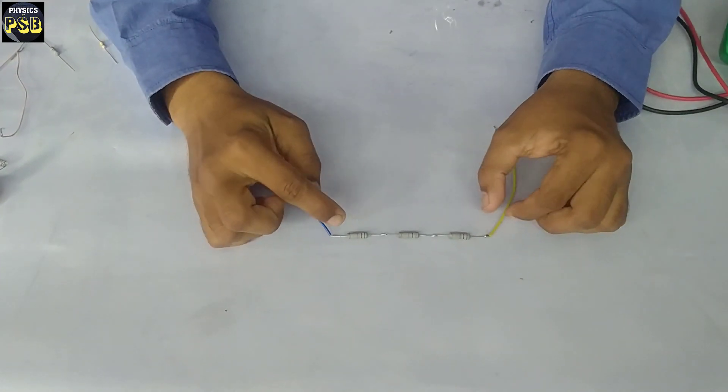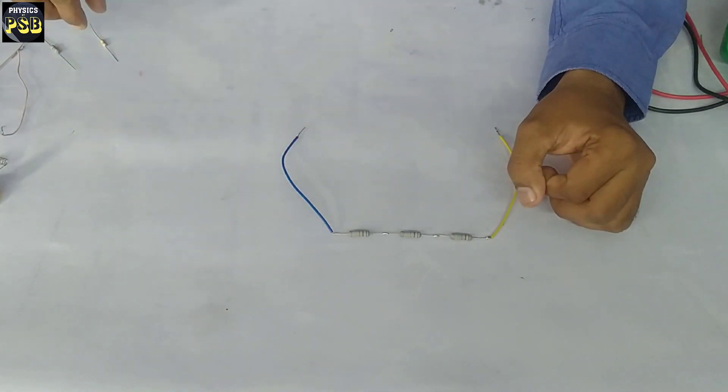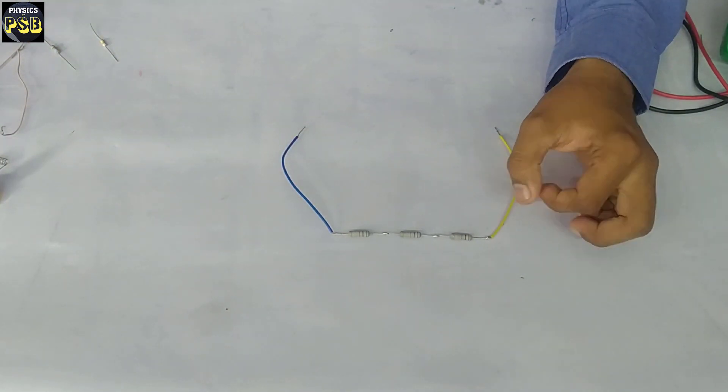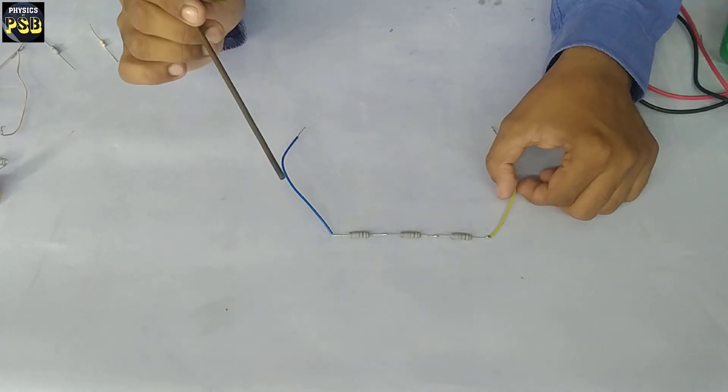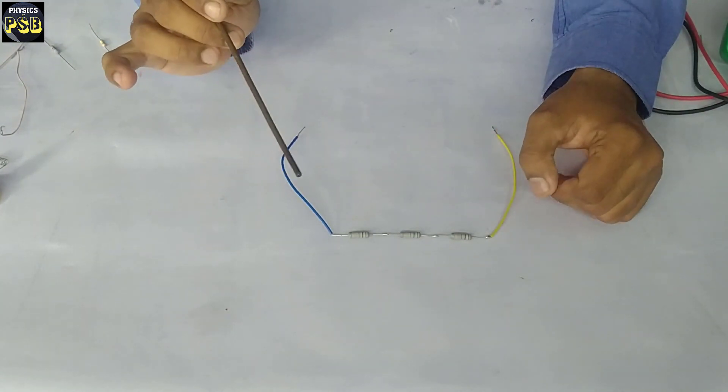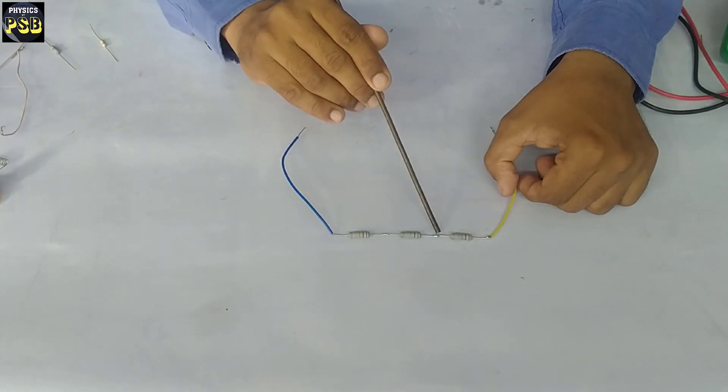When we say resistors, it might be a bulb, a filament, or even a device. Here I have taken three resistors. When we connect the resistors in this manner, then we call the combination a series combination.